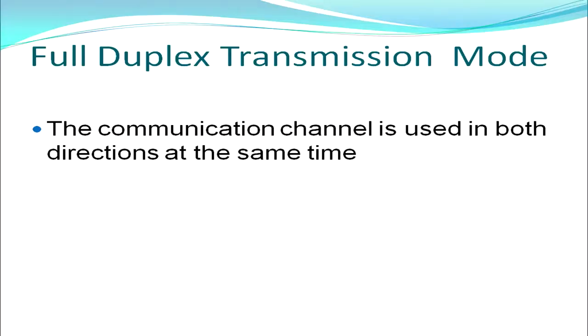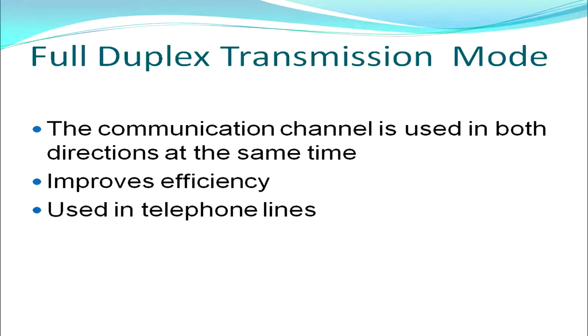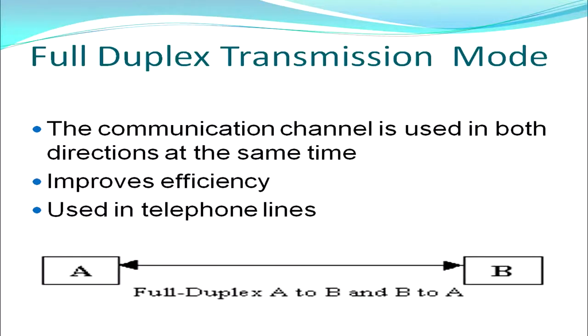We move on to full-duplex transmission mode. It is the best transmission mode being used these days, as the communication channel is used in both directions at the same time, saving a lot of time and improving the efficiency of networks. Our telephone lines majorly use the full-duplex transmission mode — one single telephone line is used to send and receive data simultaneously. Full-duplex is the most efficient transmission mode for communicating data over the network.